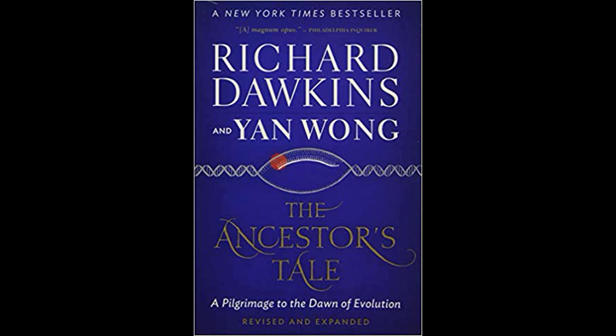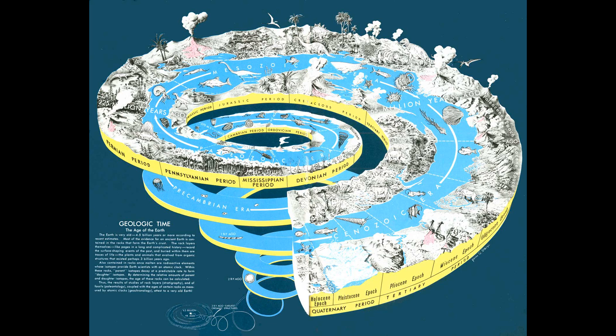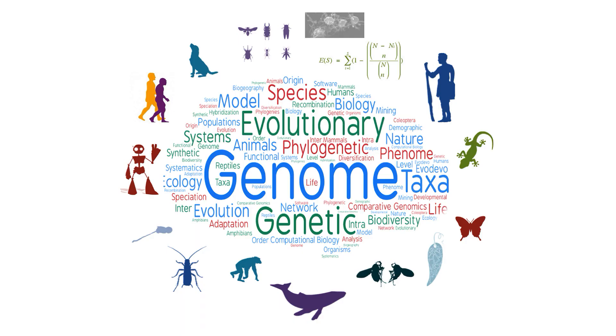If you're unaware, in this book, rather than going forward, Dawkins and Wong travel backwards through time, meeting our ever more distant relatives as they go. Throughout the book, the authors recount various organisms' tales, analogous to Geoffrey Chaucer's Canterbury Tales, in which the organisms serve as a jumping-off point for describing some concept in evolutionary biology, whether it be encephalization quotients, molecular clocks, sexual dimorphism, etc.